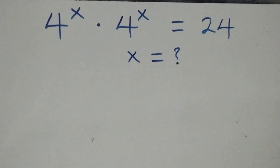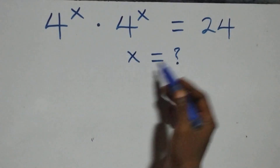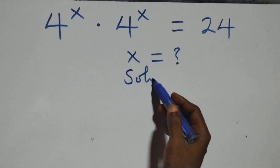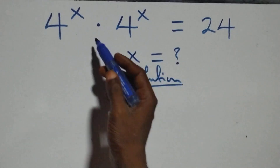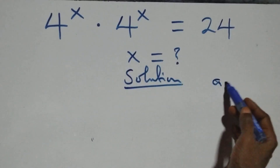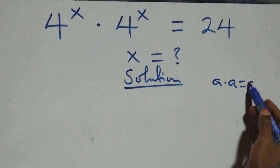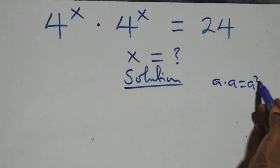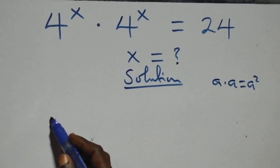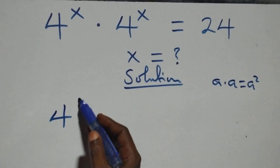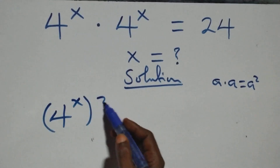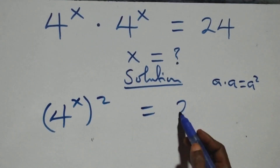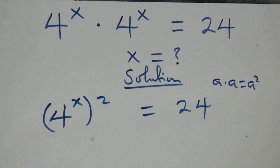Hello, you're welcome. Here we solve a nice exponential equation. What we have here follows the rule: a times a is the same thing as a squared. We can write this as 4 raised to the power x, all squared, equals 24 on this side.